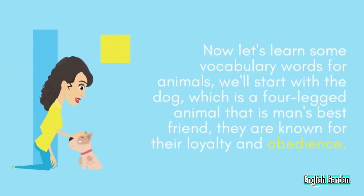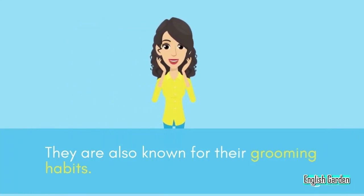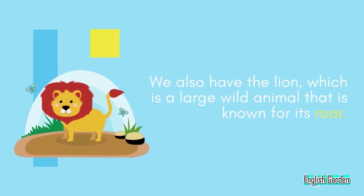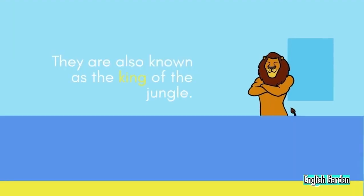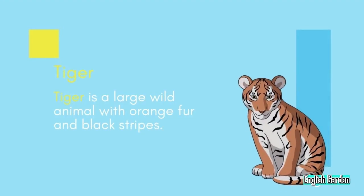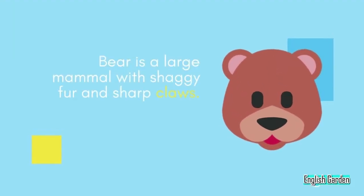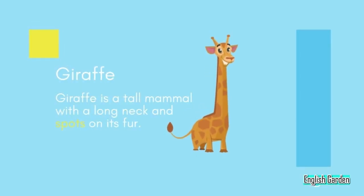Now let's learn vocabulary words for animals. The dog is a four-legged animal that is man's best friend, known for loyalty and obedience. The cat is a four-legged animal known for being independent and aloof, also known for grooming habits. The lion is a large wild animal known for its roar. The elephant is a large land mammal with a long trunk. The tiger is a large wild animal with orange fur and black stripes. The bear is a large mammal with shaggy fur and sharp claws. The giraffe is a tall mammal with a long neck and spots on its fur.